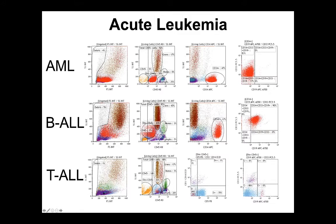In the bottom row, we have a T-ALL example where the BLASTs are 33% of total. They are CD45 positive, CD5 only positive and negative with all other markers, including CD34.